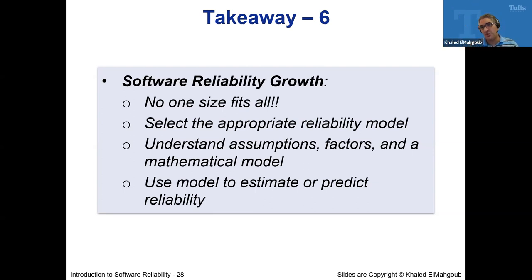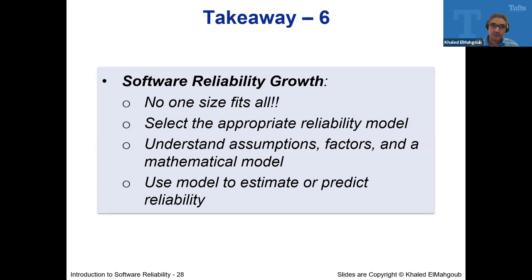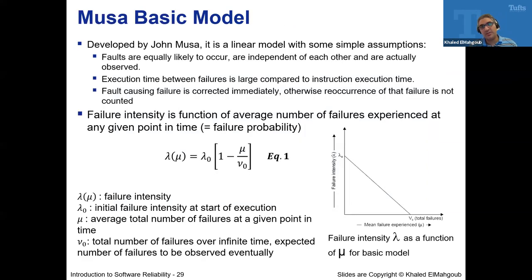Don't say 'the model tells me to stop tomorrow, so I must stop tomorrow.' You need to weigh your options: do you still have critical bugs? Is there something you cannot release the software with? These models help, but they are not the end of the story — they are part of the puzzle, not the whole puzzle. Any questions before we continue?